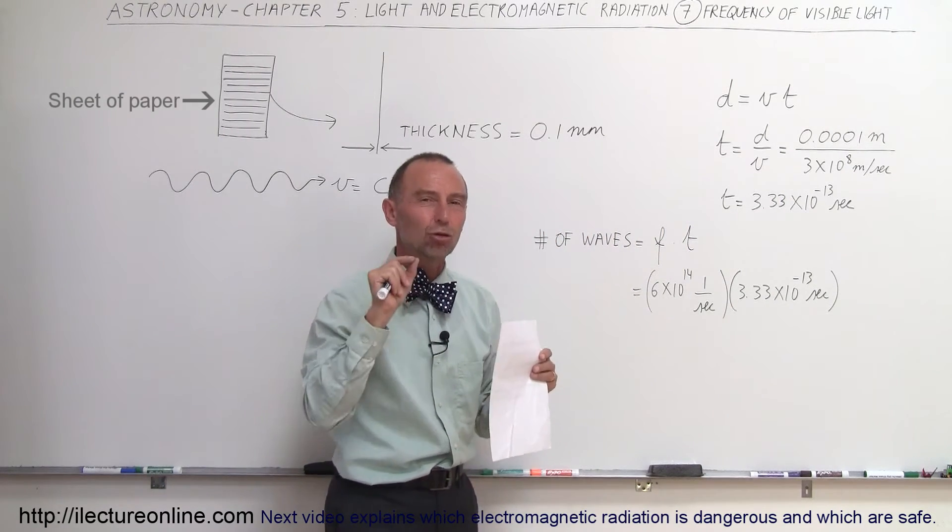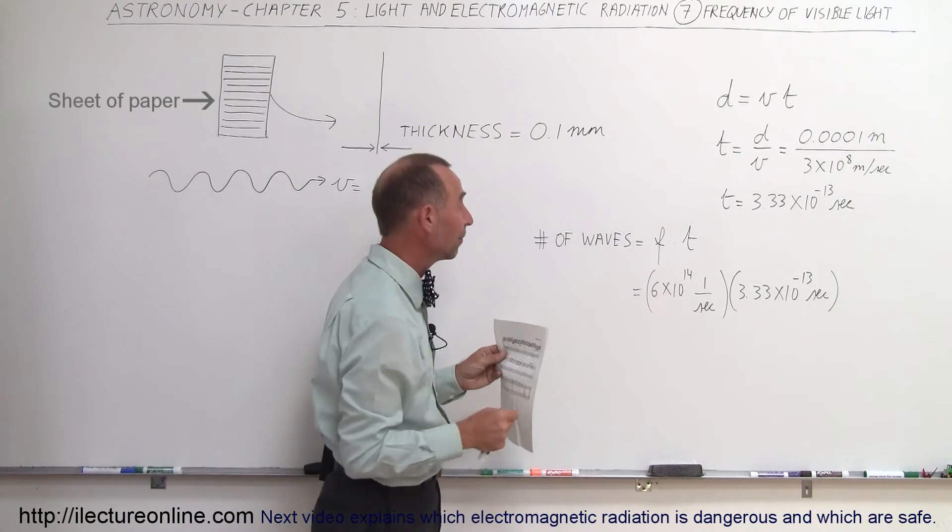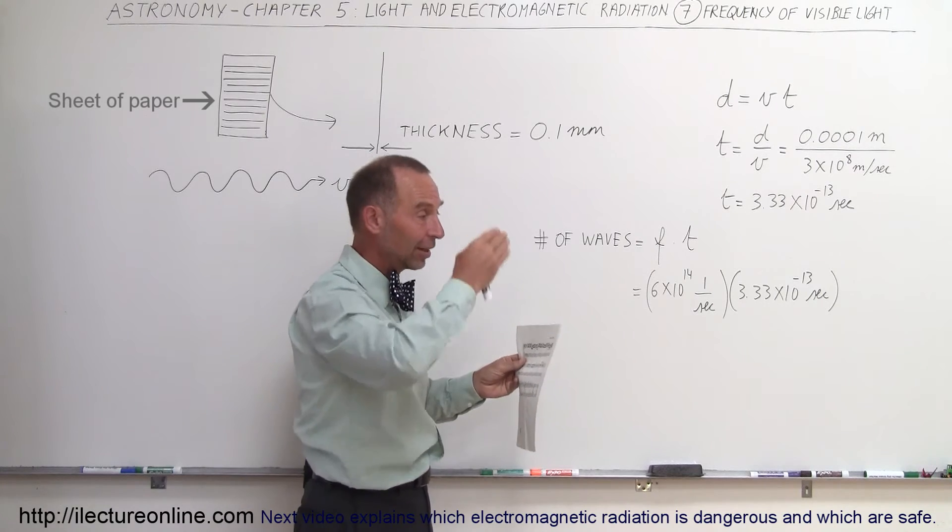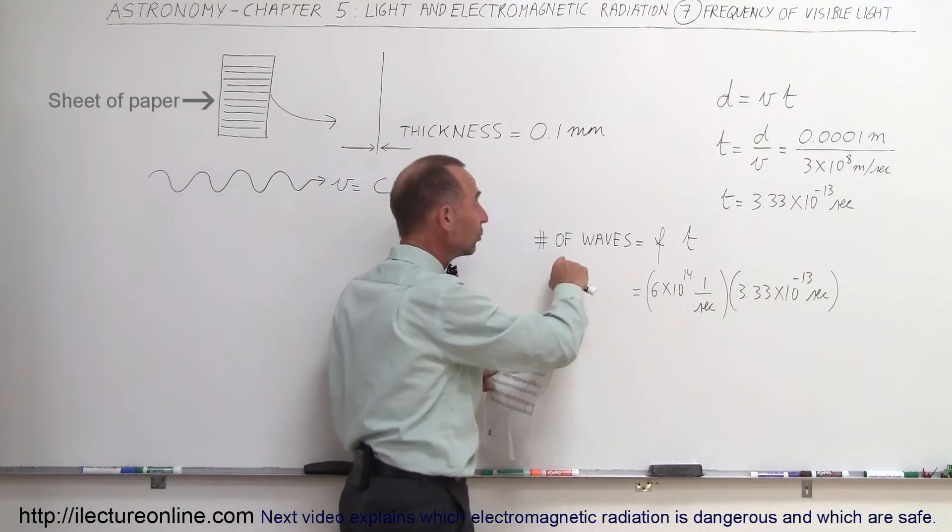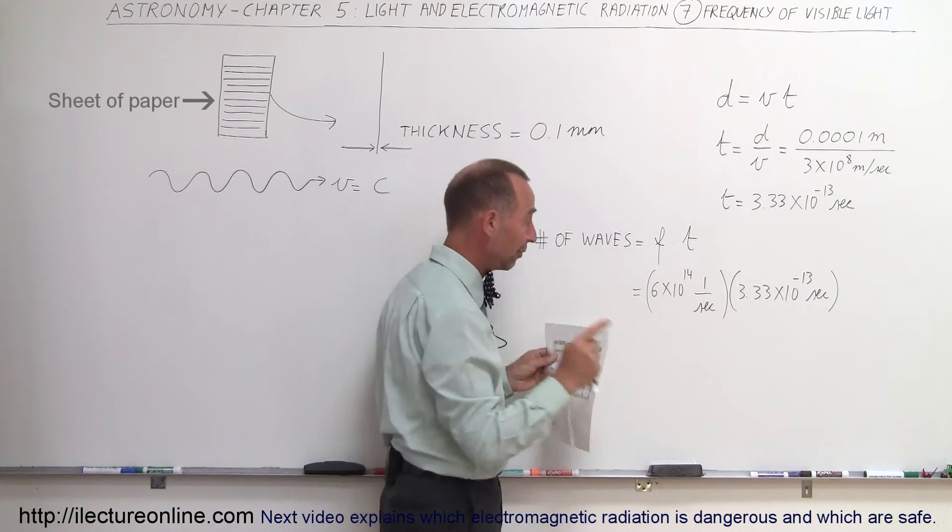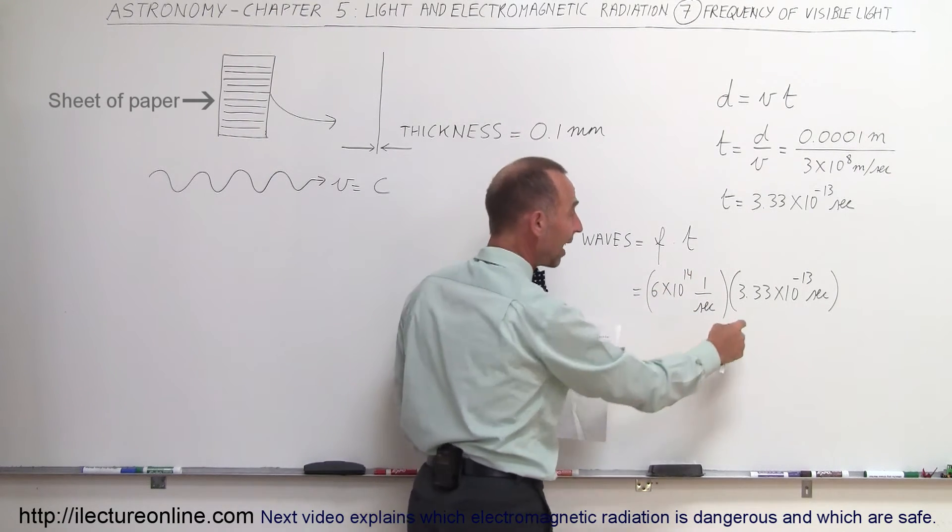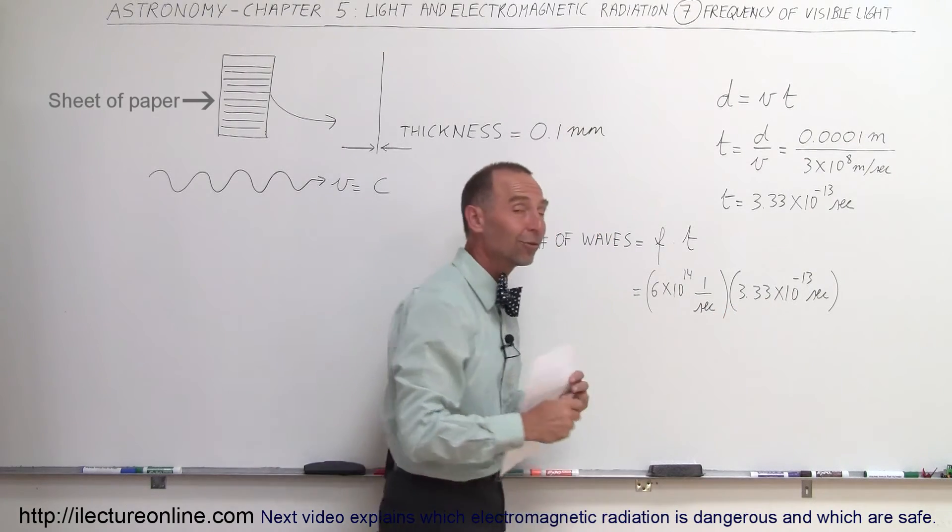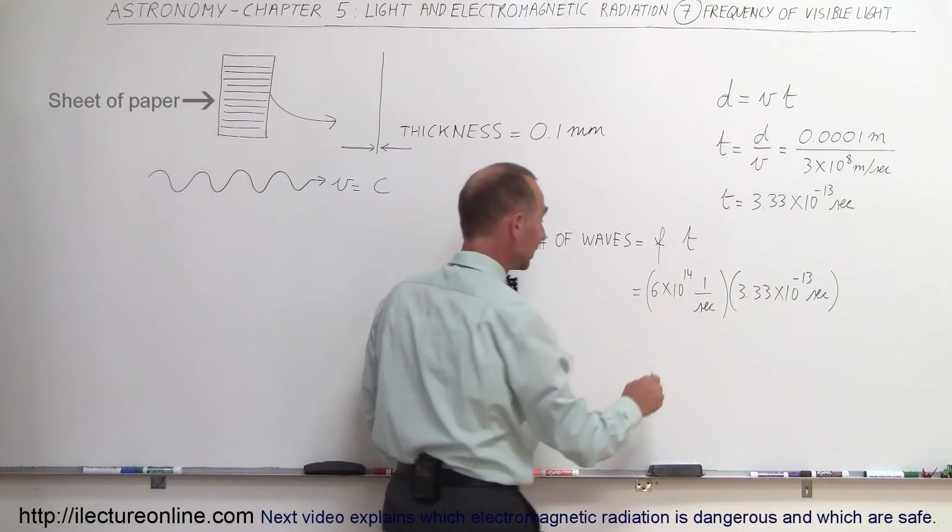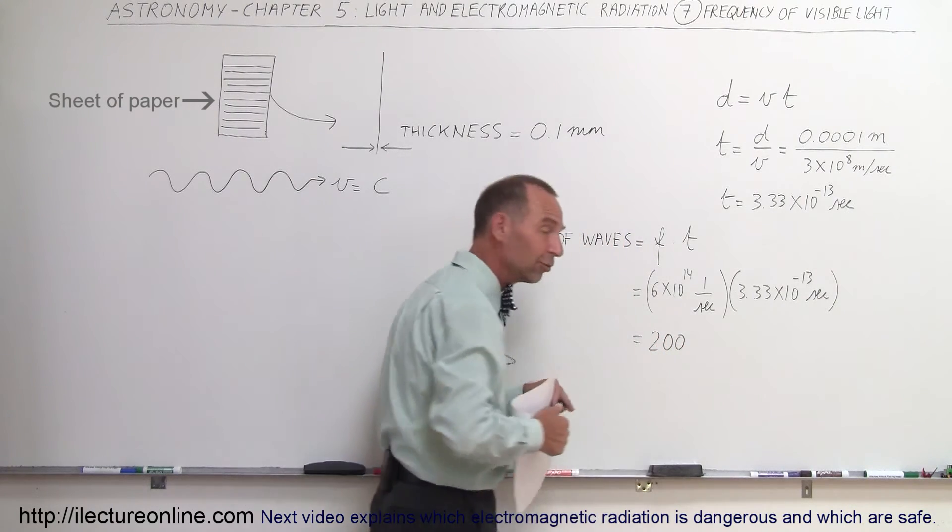Less than a trillionth of a second, the amount of time that it takes for light to pass the thickness of the piece of paper. The number of waves that the light will go up and down is going to be equal to the frequency times the time that it takes to pass the paper. The frequency, 6×10¹⁴ per second or Hertz, times 3.33×10⁻¹³ seconds, and the answer turns out is two hundred times - two hundred waves.